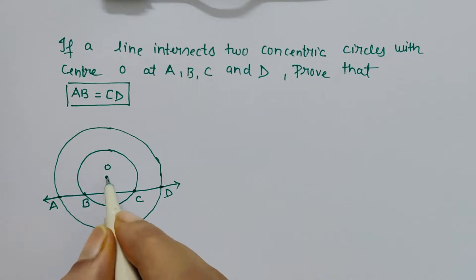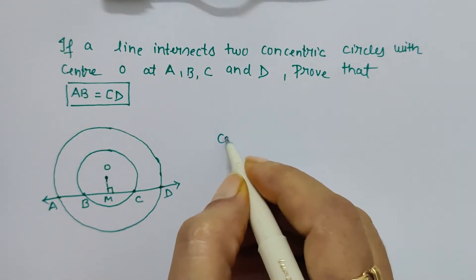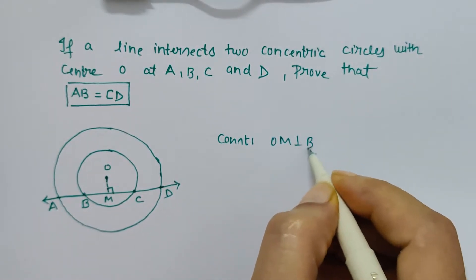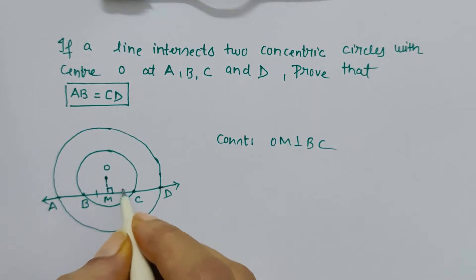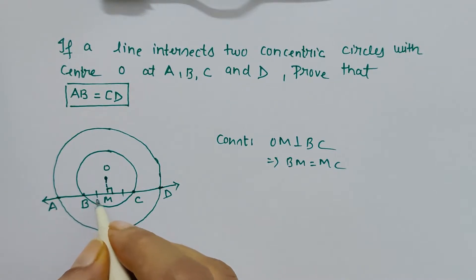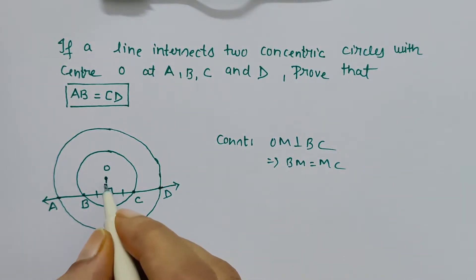So if OM is a perpendicular line drawn by construction—let's say OM is perpendicular to BC—then BM will equal MC. By the theorem, it will bisect the chord.